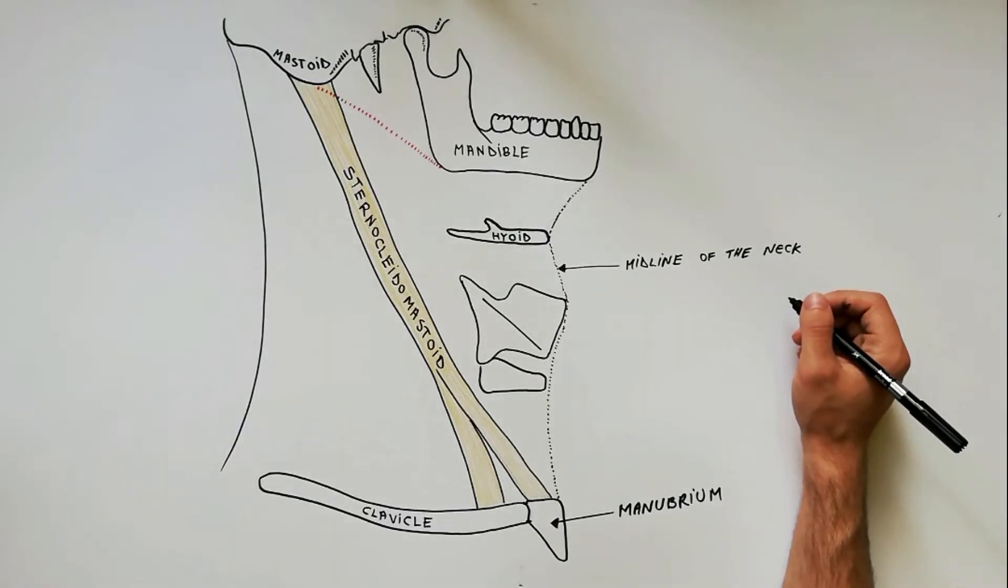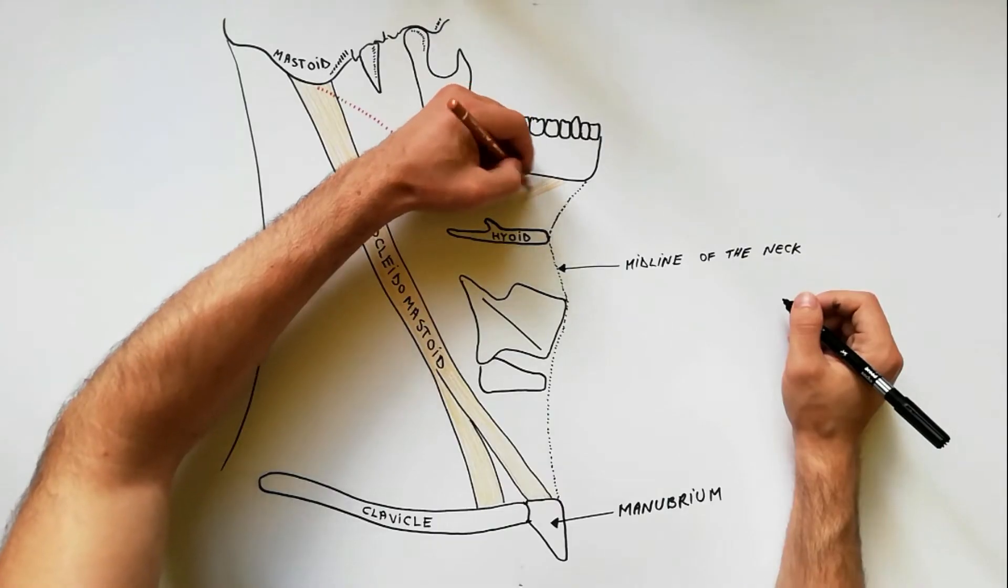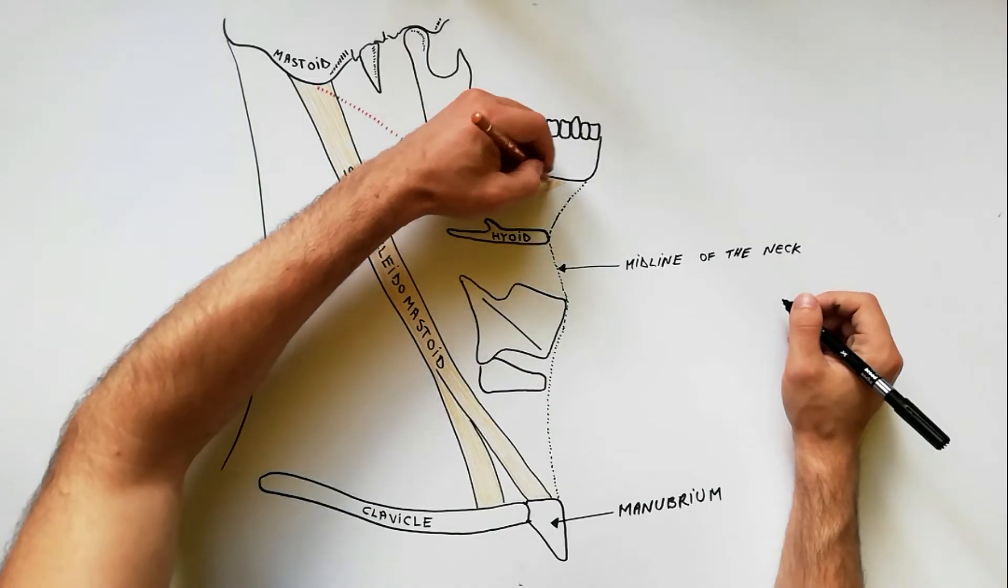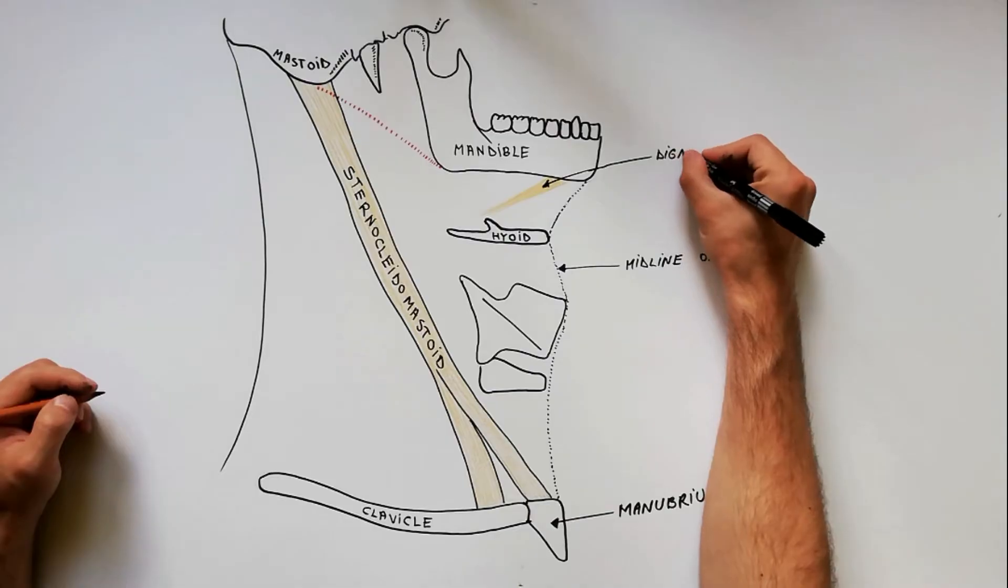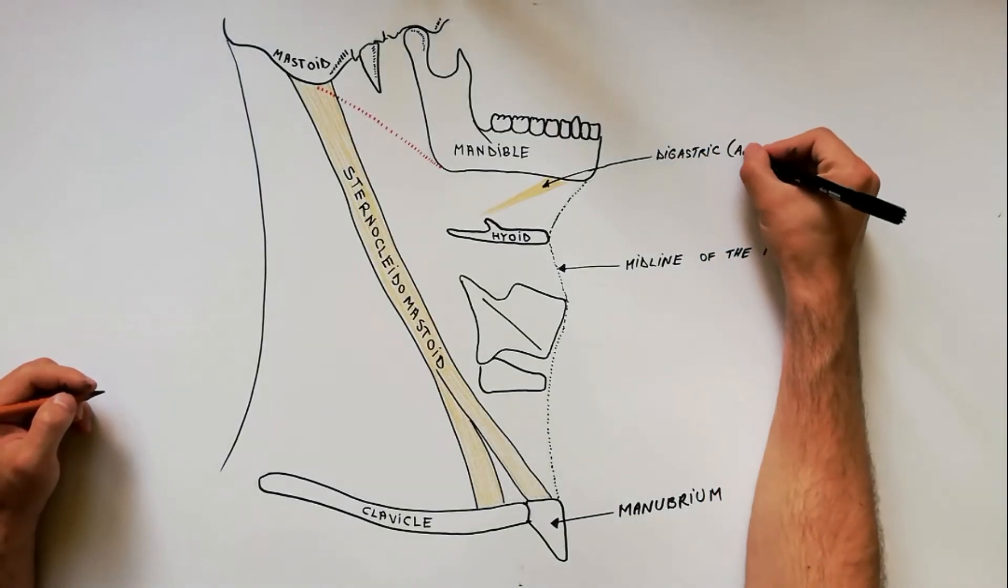First we will indicate the digastricus with its two bellies. The anterior belly arises from a depression on the inner side of the lower border of the mandible, called the digastric fossa of mandible.